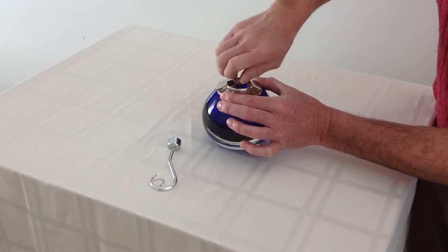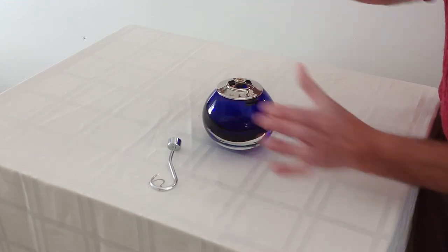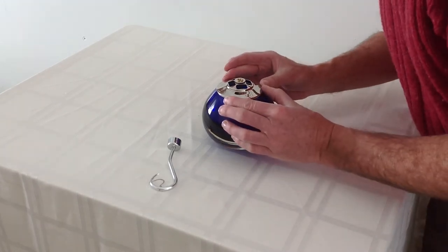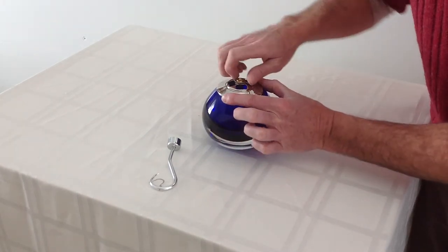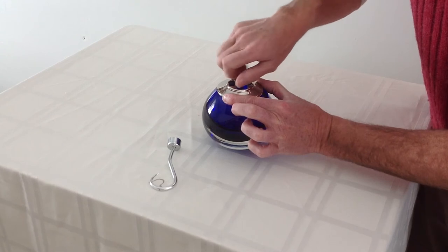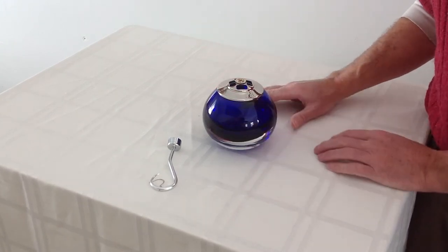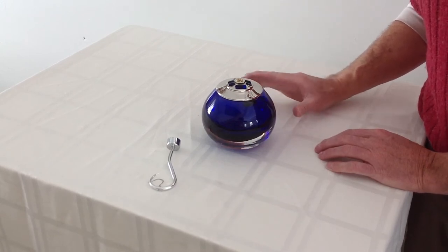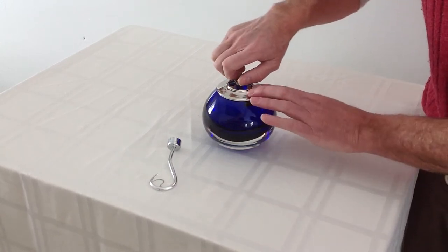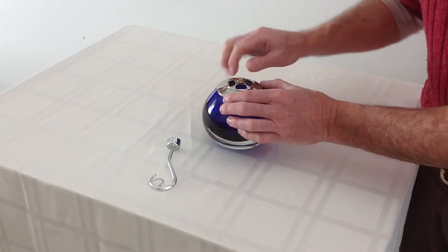Now once it starts to get snug, make sure you have it centered right on the top just how you want it. Then snug it down a little bit more and remember this entire operation is finger tighten only. You don't need pliers or any tools to do this at all.